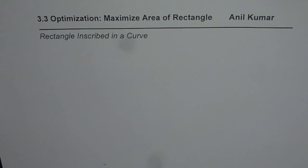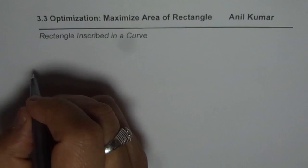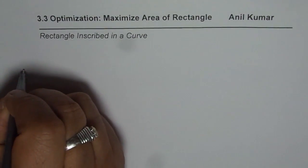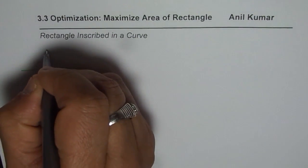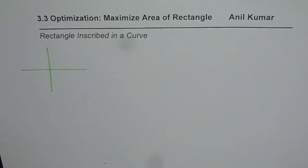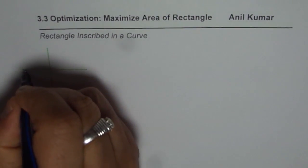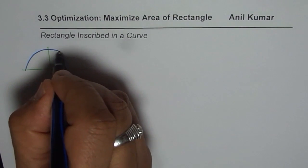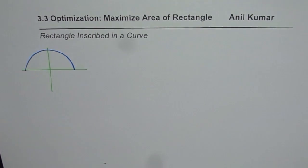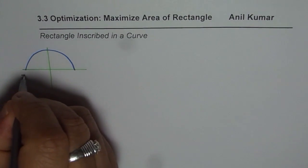I am Anil Kumar and in this video we will consider how to maximize the area of a rectangle in a given shape. To begin with, let me take a shape of a rectangle inside a semicircle. So let us take a semicircle of radius 5. I have just drawn a semicircle here and the radius of this semicircle is 5.